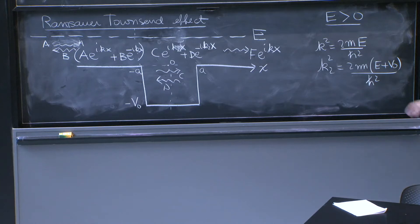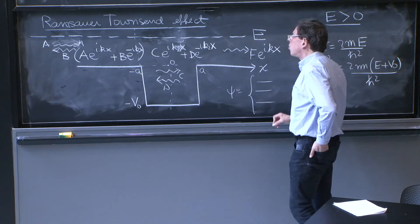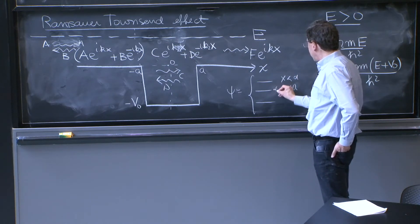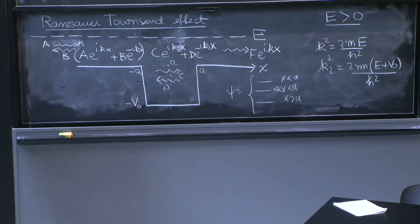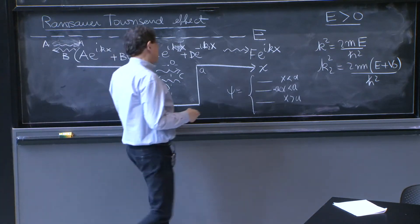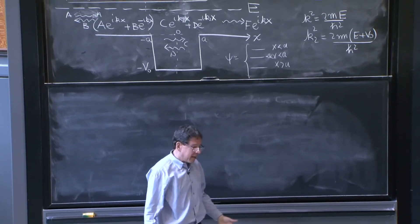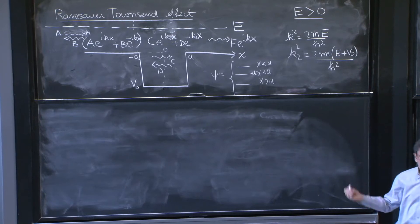OK. So we've set up the problem. The wave function, I would have to write it as three expressions. One for x less than a, one for x in between a and minus a, and one for x greater than a. And those are these 1, 2, and 3 formulas. Any questions about the setup so far? OK. Well, at this moment, you will eventually have some practice on that.